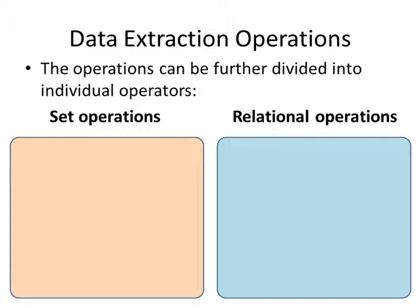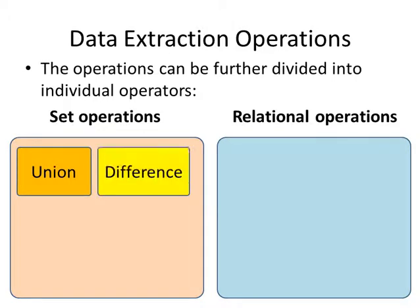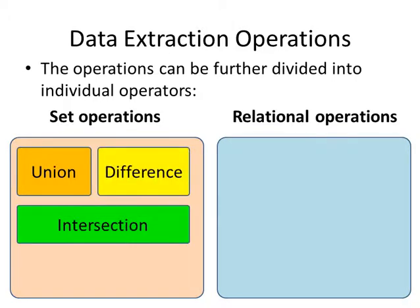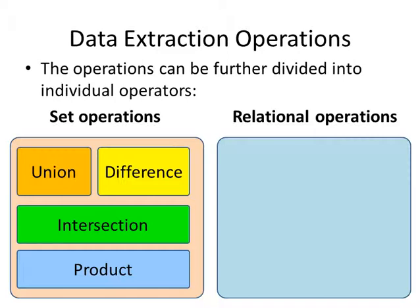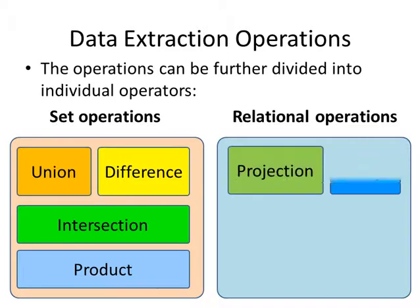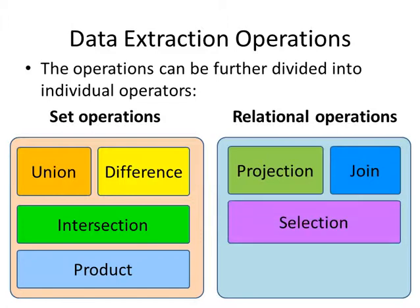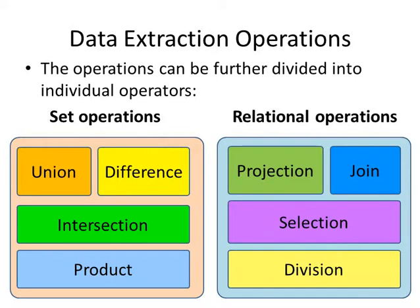These two sets of mathematical operations can be subdivided into their individual operators. For the set operations, we have union, difference, intersection, and product. And for the relational operations, we have projection, join, selection, and division.